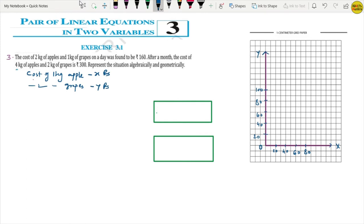If we make this equation, what is it? 2 kg apples means X plus 1 kg grapes means Y equals to Rs. 160. What is our equation 1? 4 kg apples and 2 kg grapes equals to Rs. 300. This is our equation 2.